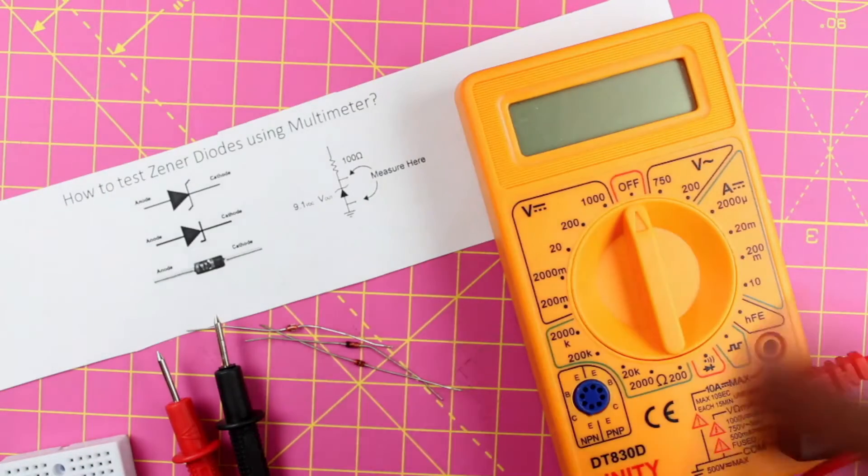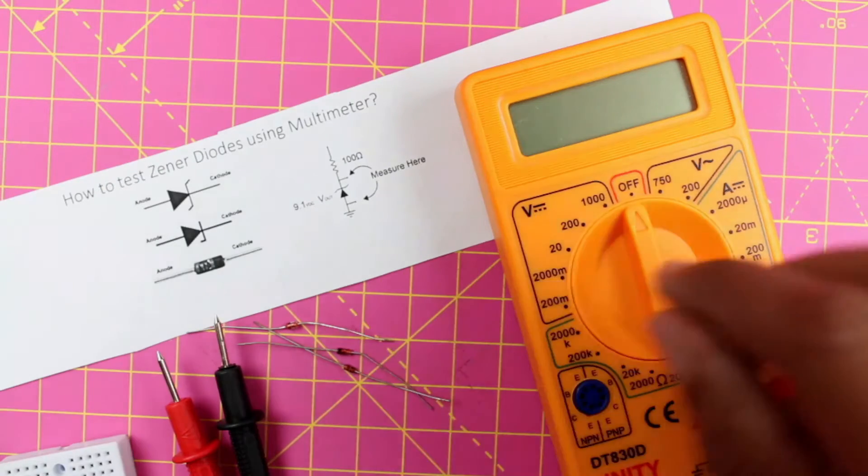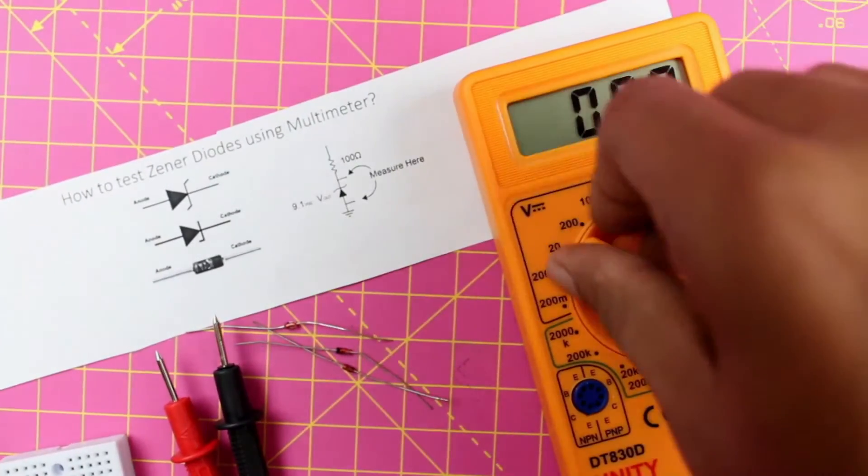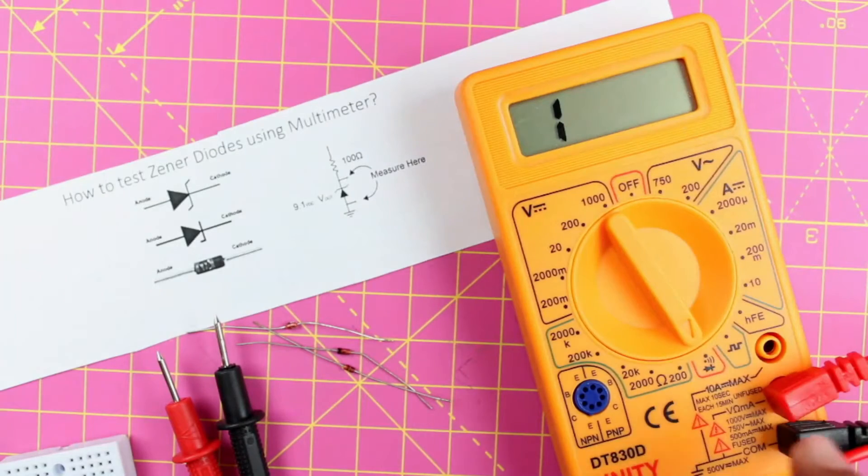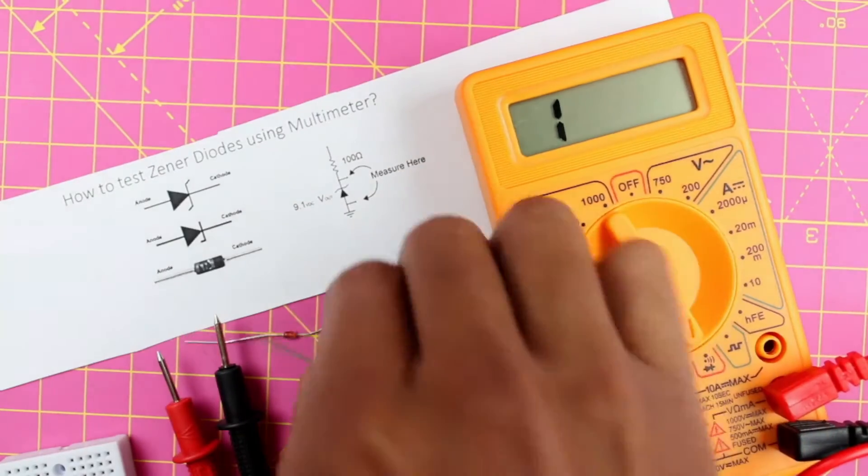There are actually two things that you can do to check if your zener diode is working or not. First thing is you can put your multimeter in diode mode. As you can see this is your diode mode and obviously your red probe should be in voltage and your black probe should be in common.